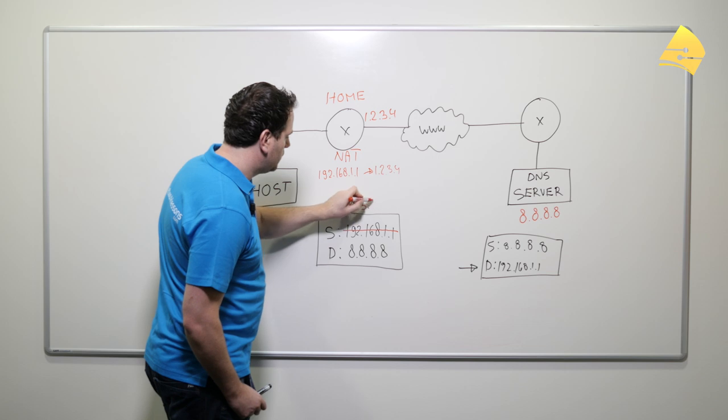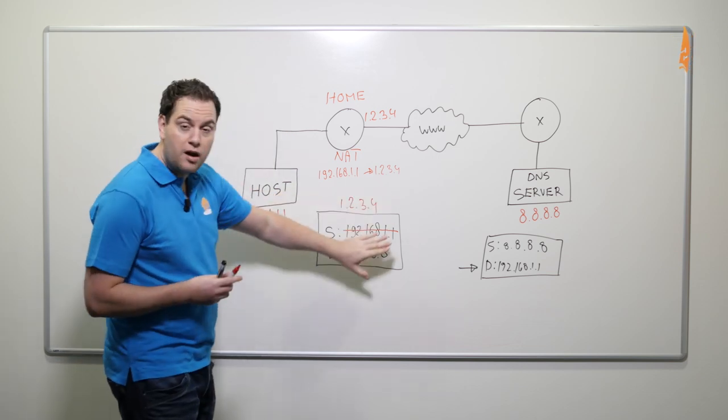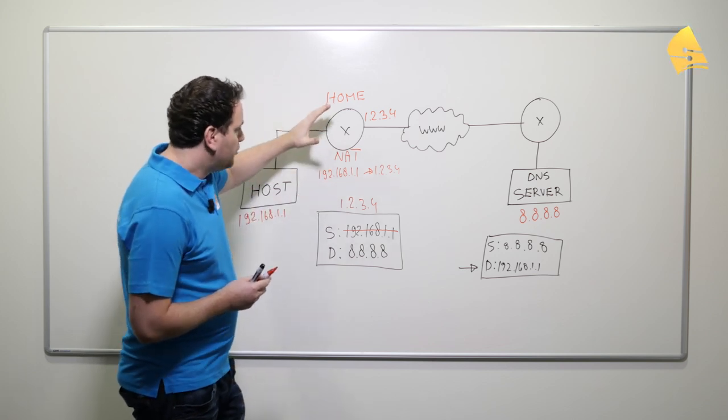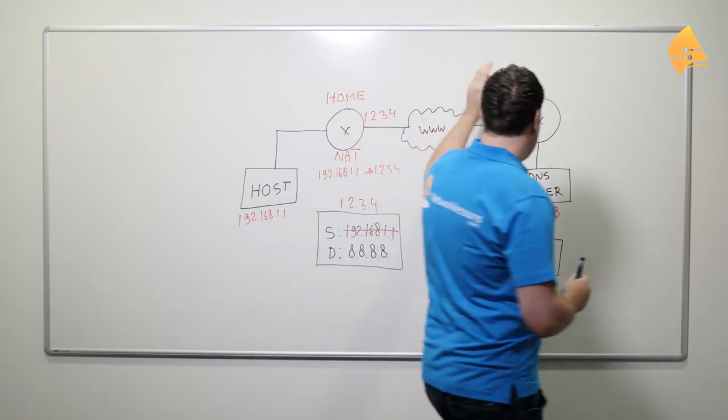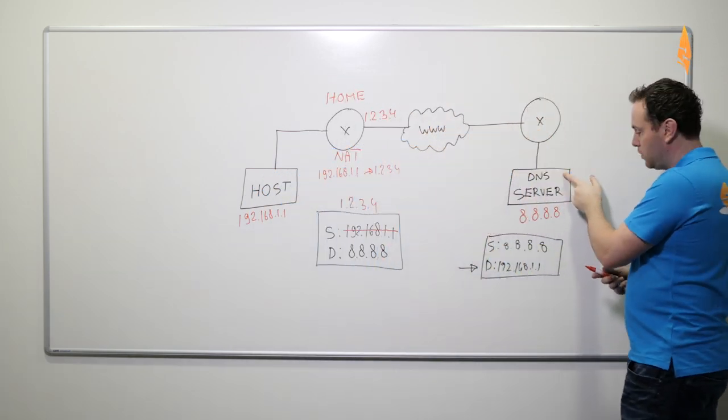So that means that the IP packet will look like this now. This IP packet with the changed source IP address will be forwarded to the ISP on the internet. It makes it to this router and then it makes it to this DNS server.